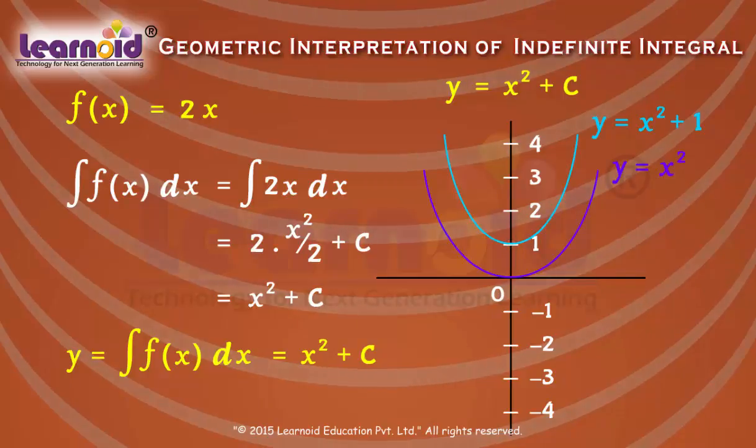Similarly, for c = -1, y = x squared minus 1 is a parabola passing through x = -1.